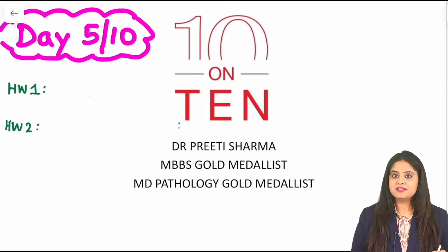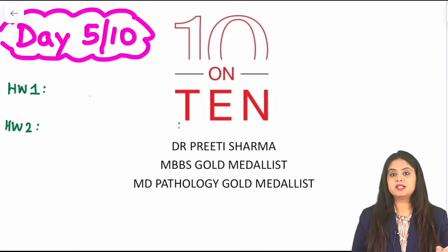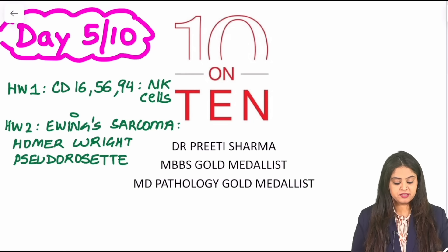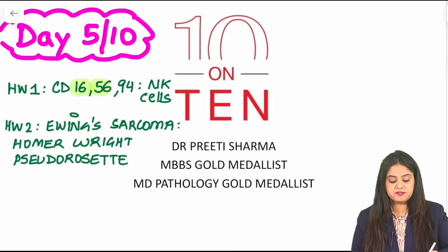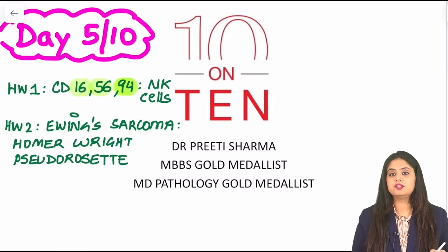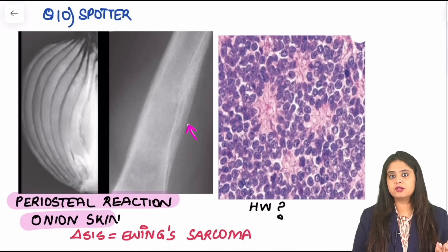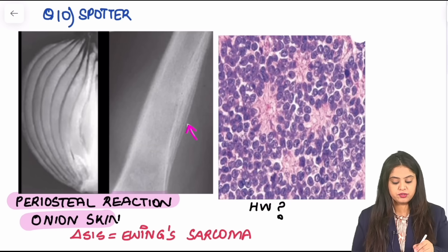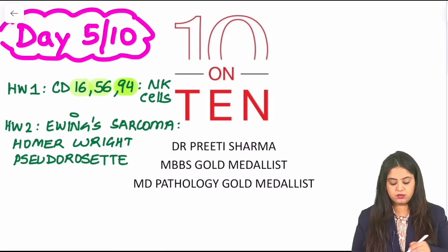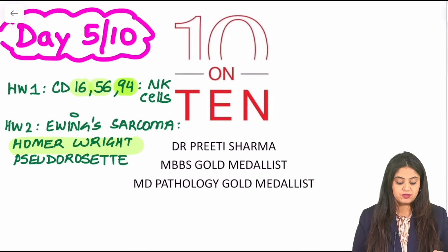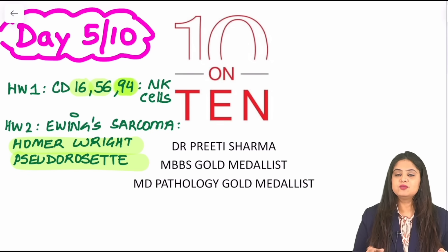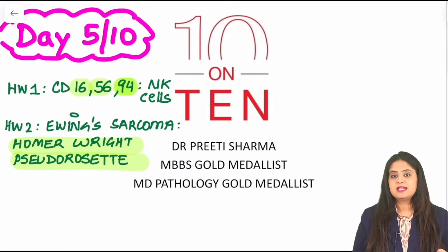Welcome to Day 5 of this 10-on-10 series. First, let's discuss the homework from the last session. The markers of the NK cell — which most of you answered correctly — are CD16, CD56, and CD94, which was a recent exam question. Second, I showed you a picture of Ewing sarcoma from a radiology point of view showing the onion skin periosteal reaction, and I asked about this rosette, which is the classical Homer-Wright pseudorosette, seen in the brain tumor medulloblastoma as well.